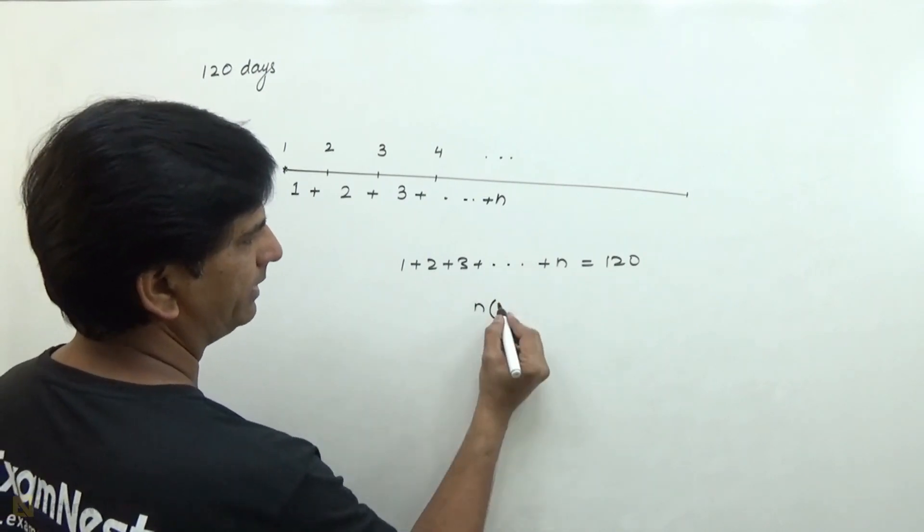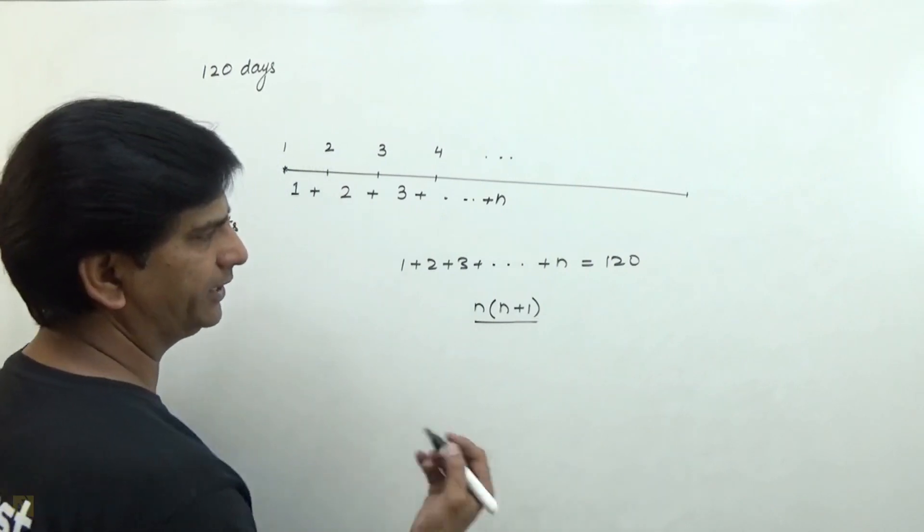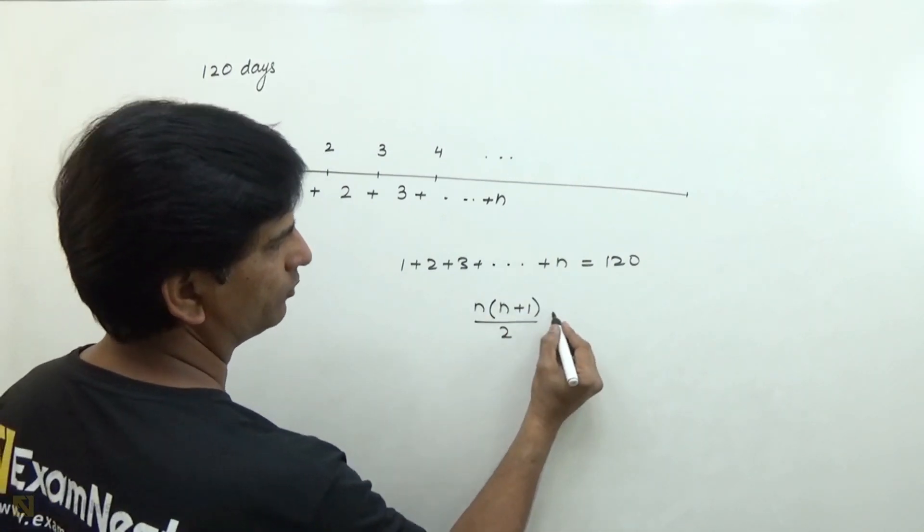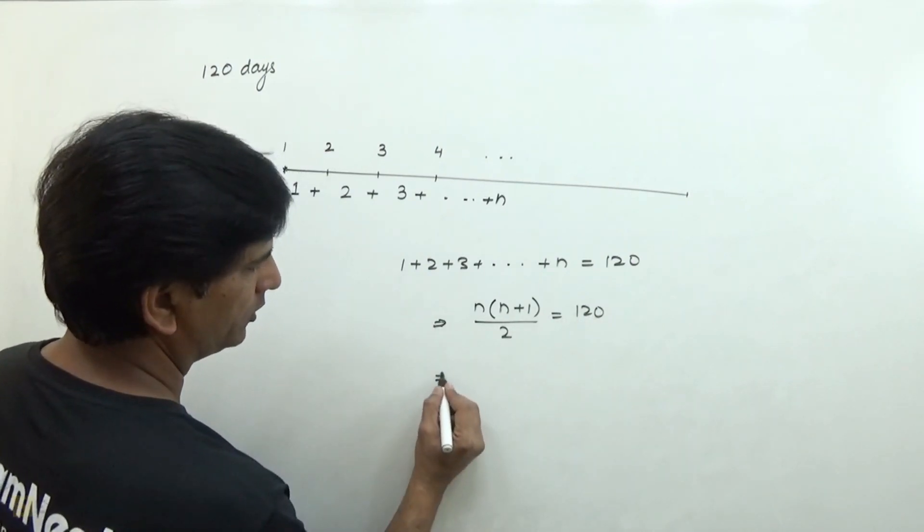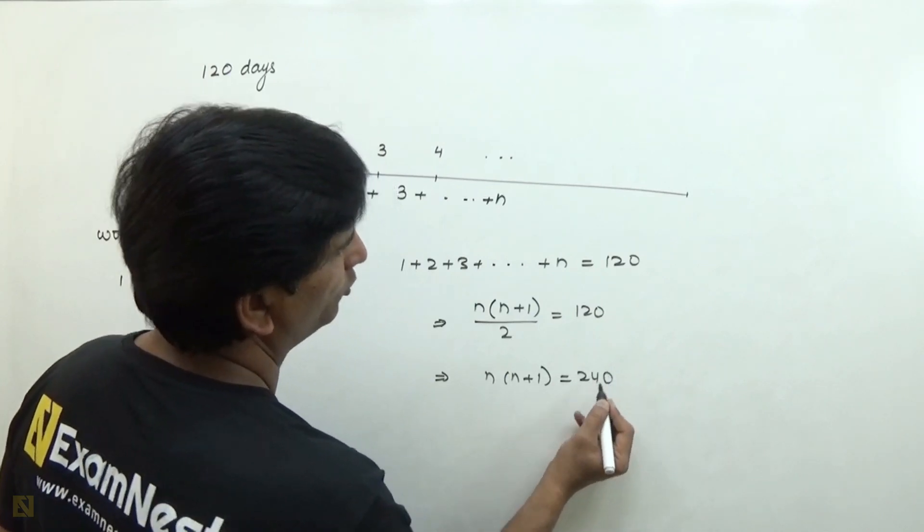Here there is a basic formula from arithmetic progression. The sum of consecutive positive integers from 1 to n is n times n plus 1 over 2. This equals 120. So n into n plus 1 is equal to 240.